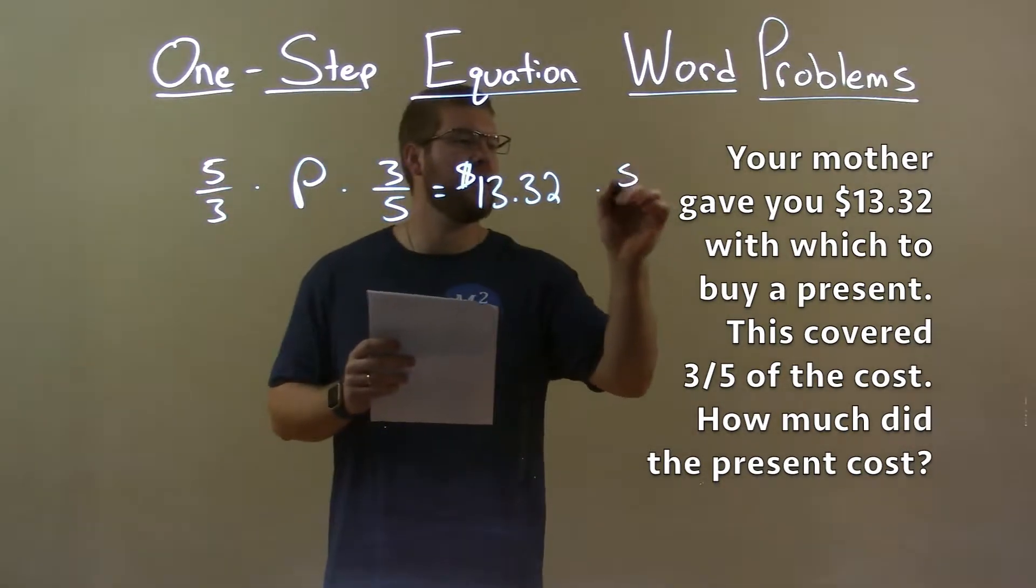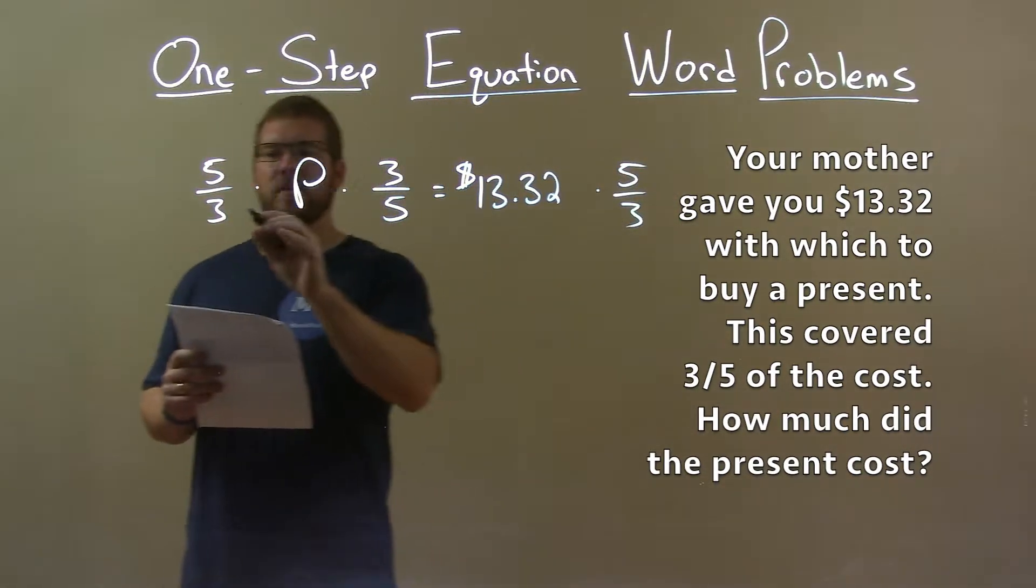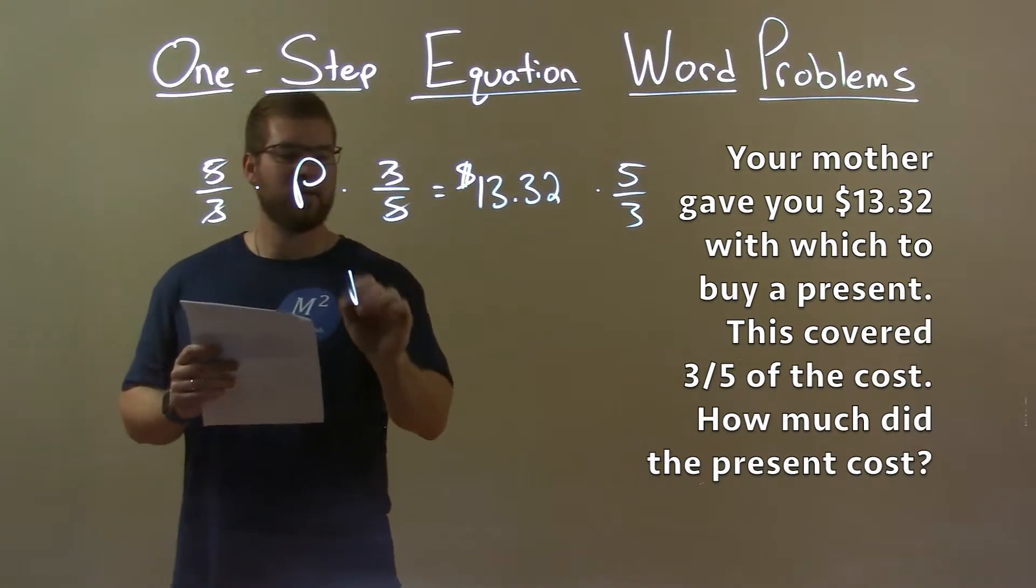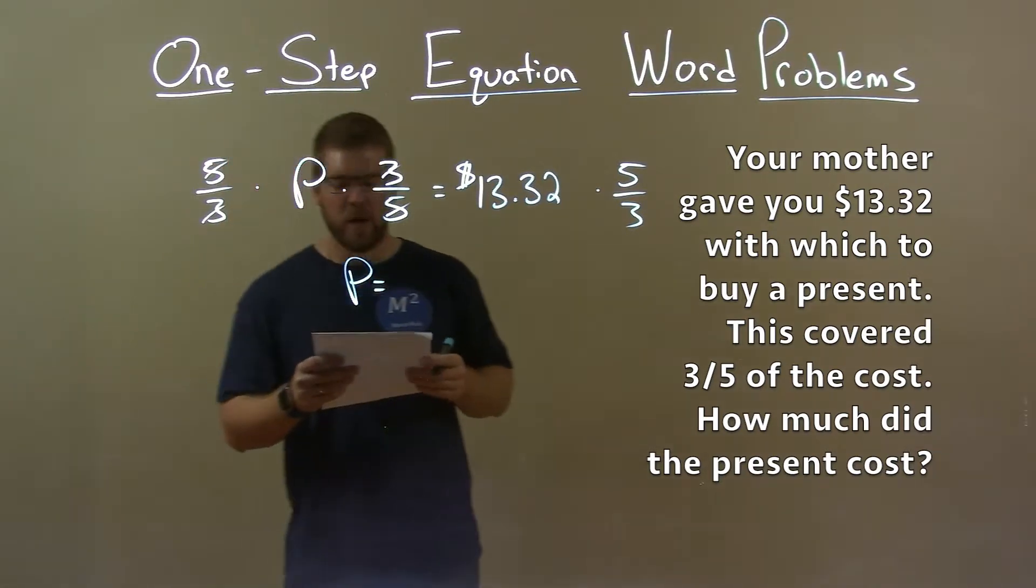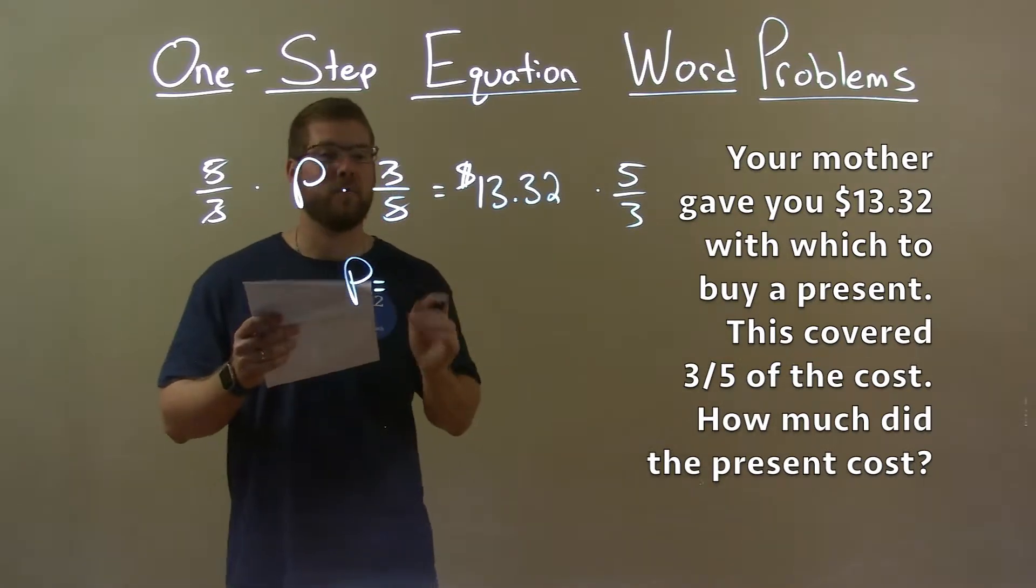and do that to both sides of the equation, this eliminates the threes cancel, the fives cancel, and this gives us one P by itself, which represents the cost of the present.